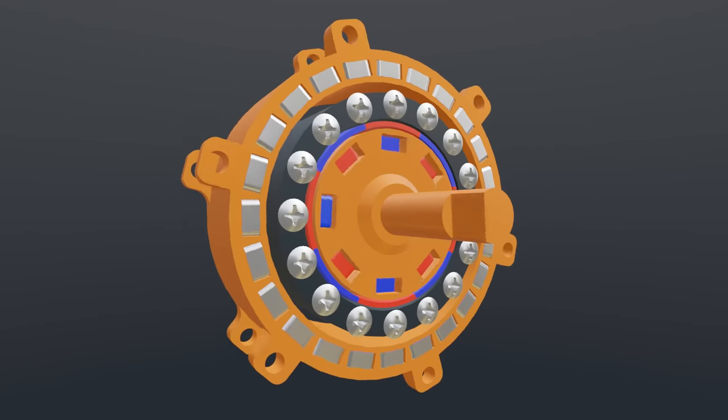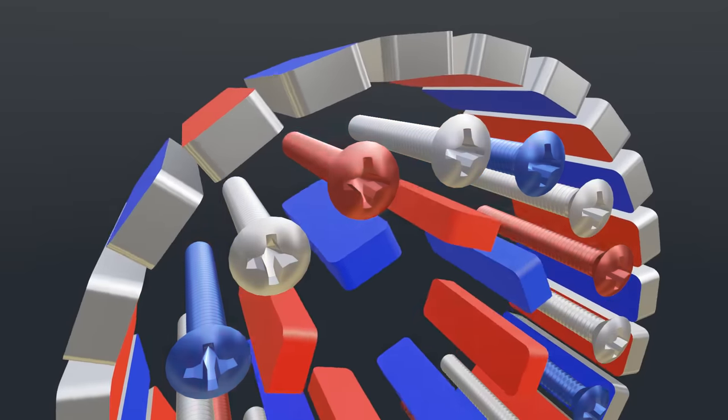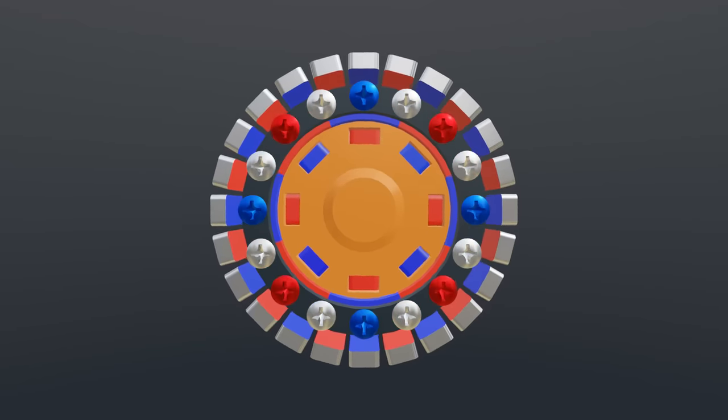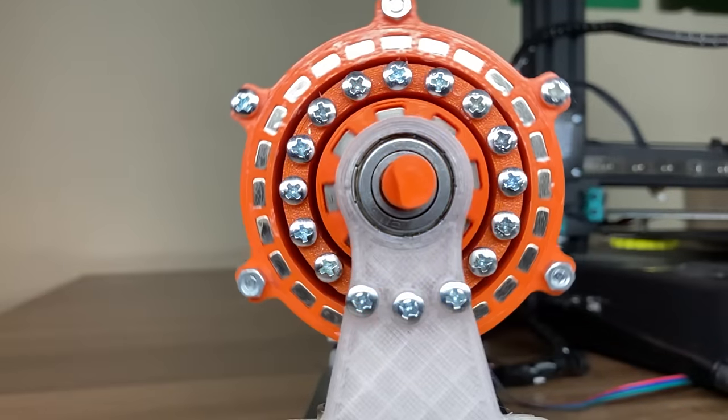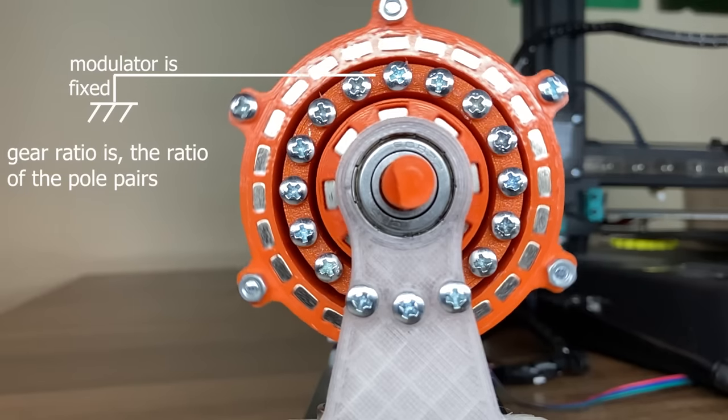Finally, with the addition of the sun gear, the modulated ring flux interacts directly with the sun gear and causes it to rotate. Notice here that as a result, the sun gear now rotates three times faster than the ring gear with the modulated flux, resulting in a three times gear ratio between the gears.